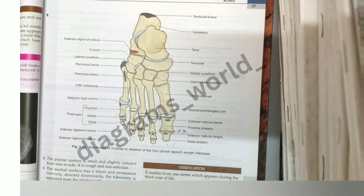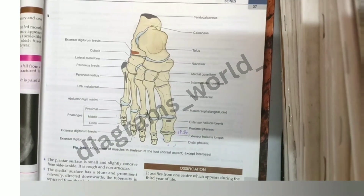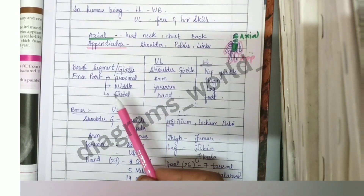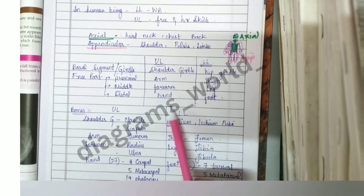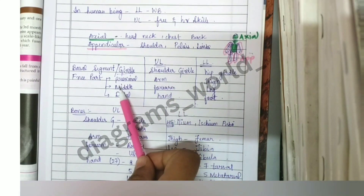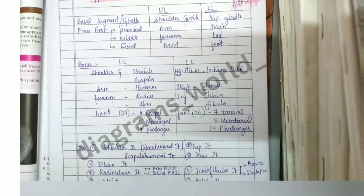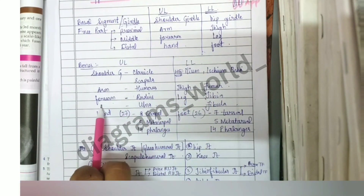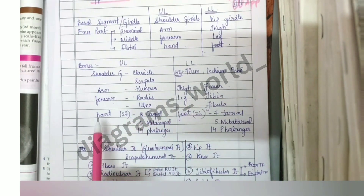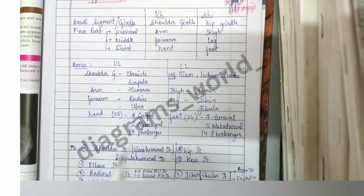In upcoming videos we will learn about each part of each limb. Notably, the basic principle of a limb is the same: girdle and free part divided into proximal, middle, and distal. Looking at the bones: in the arm and thigh we have one bone each; in the forearm and leg we have two bones each; and comparing the hand and foot, we have carpal and tarsal bones, metacarpal and metatarsal bones, and phalanges — the same pattern throughout.